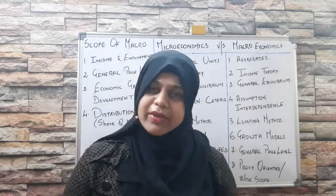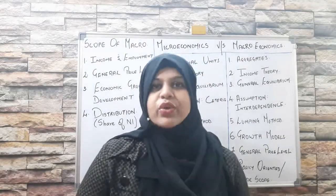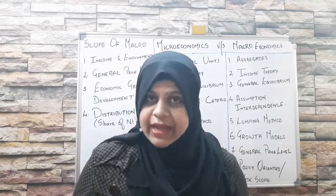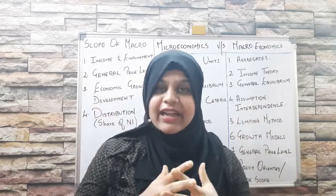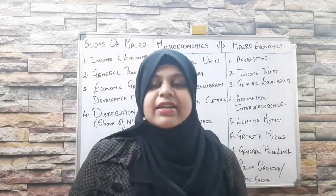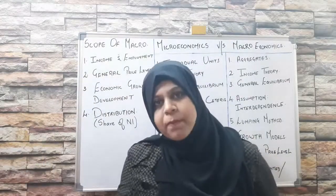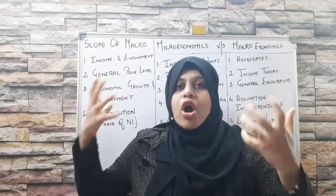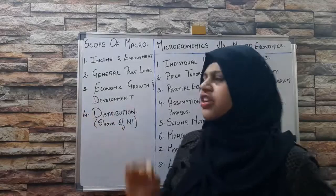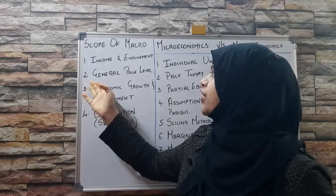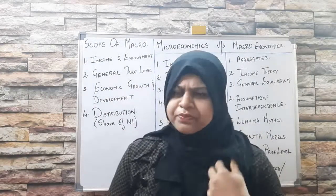To begin with the scope of macroeconomics — as a recap, macroeconomics is derived from a Greek word 'macros' which means large or big. When it is studying the economy as a whole, its scope has to be wide and large. The scope means the subject matter — all the topics studied under macroeconomics. There are four theories: the theory of income and employment, the theory of general price level, the theory of economic growth and development, and the theory of distribution.